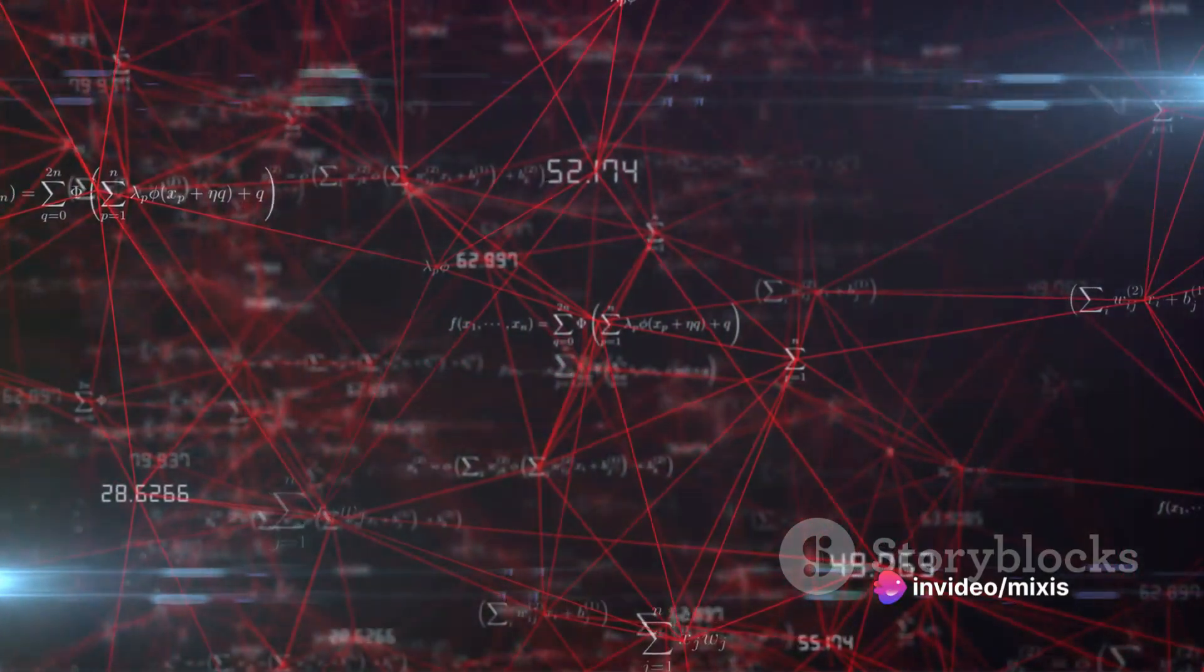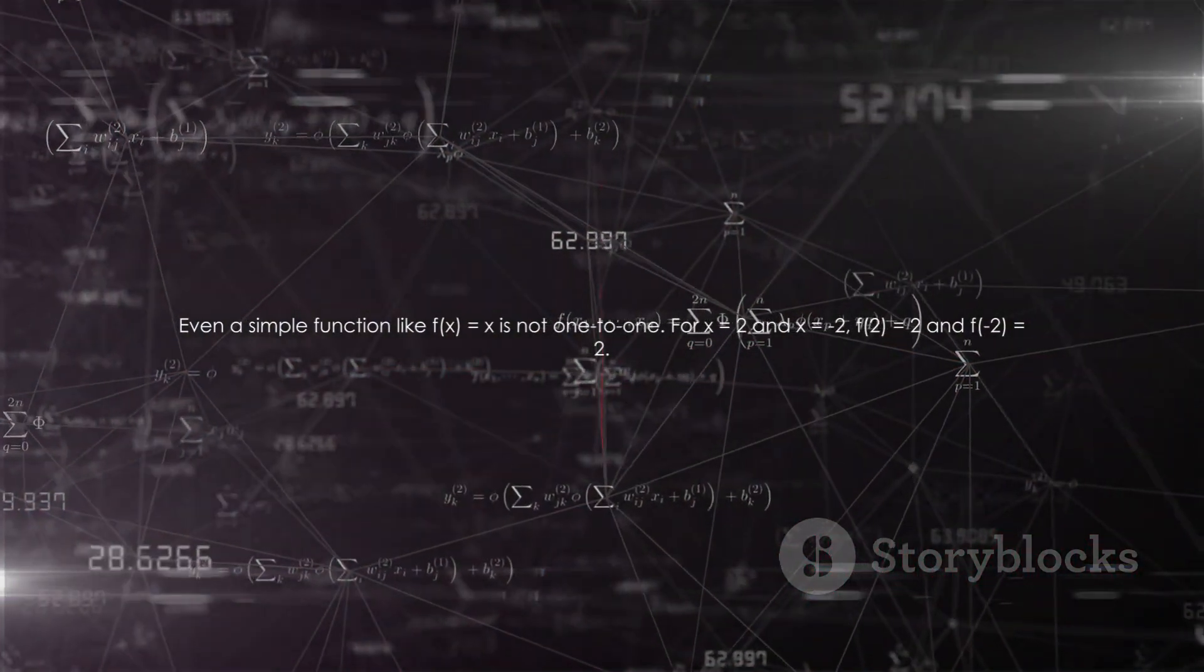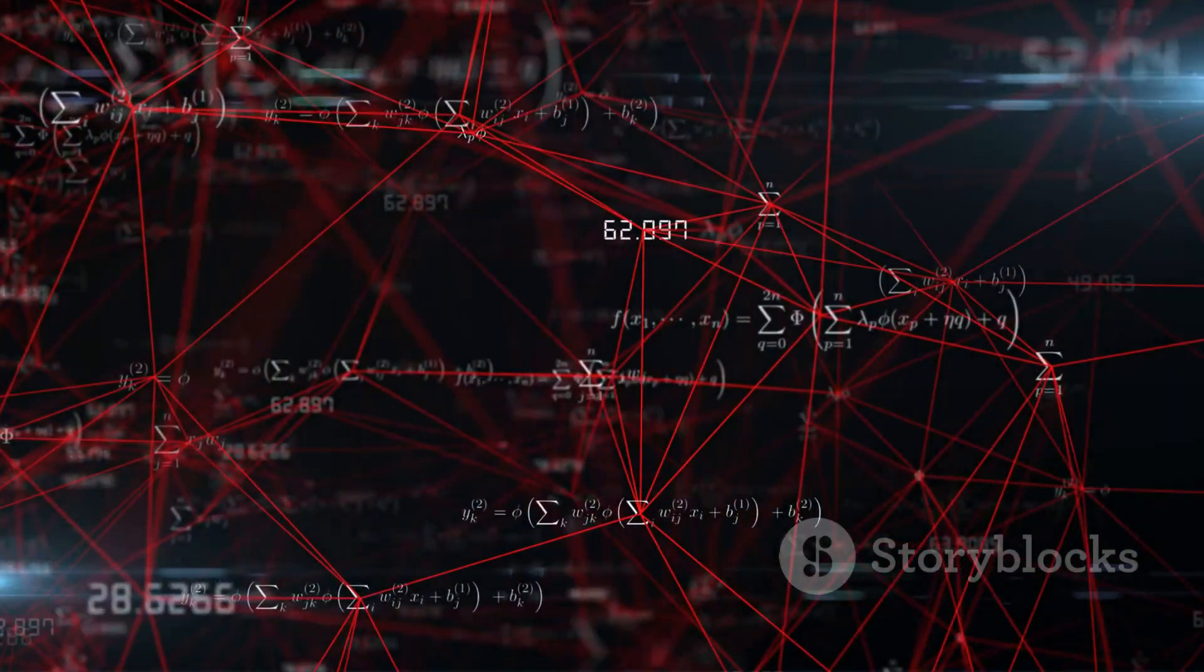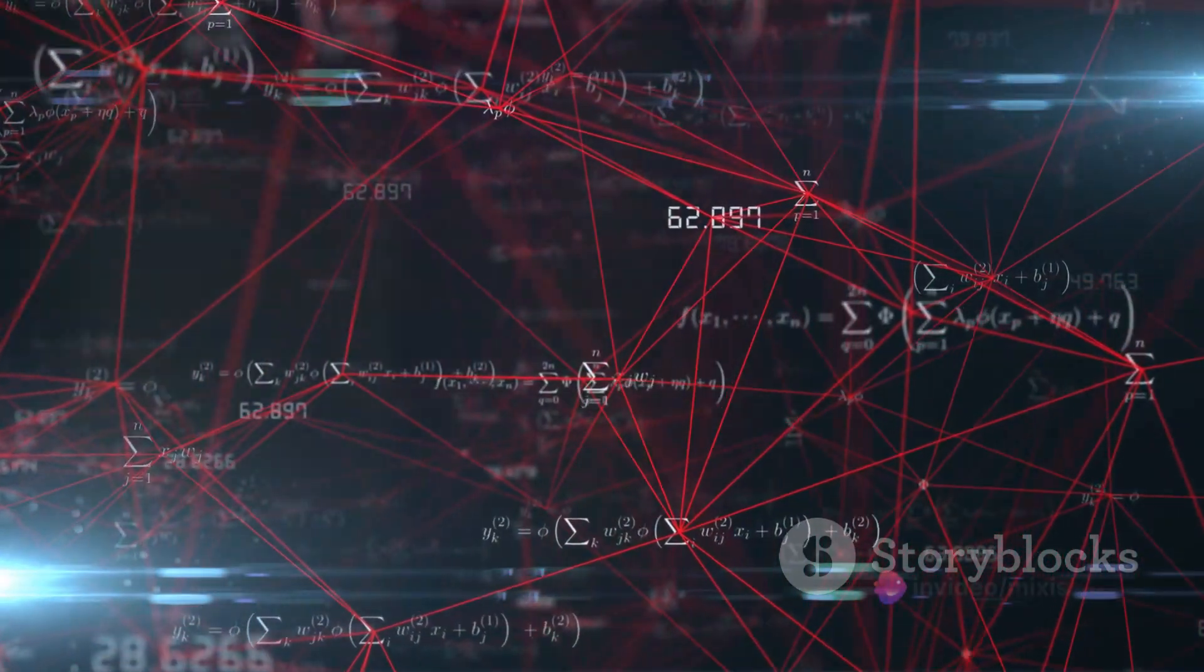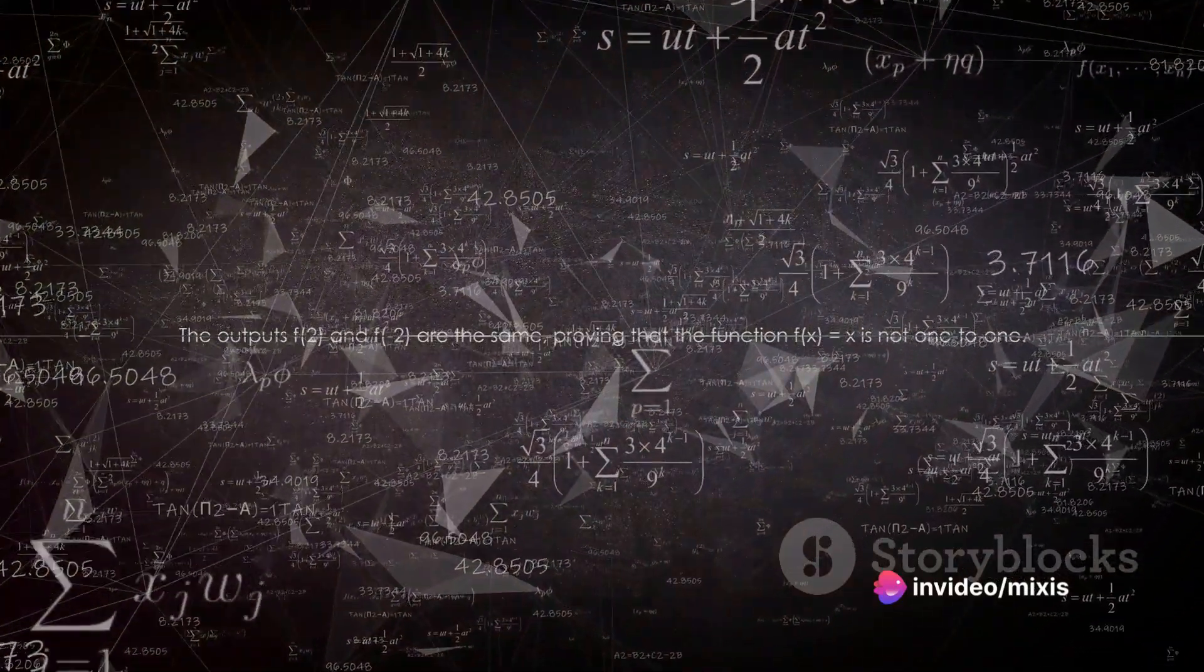Another example is the function f(x) = |x|. This function is not one-to-one either as for x = 2 and x = -2, their outputs f(2) = |2| = 2 and f(-2) = |-2| = 2 are the same.